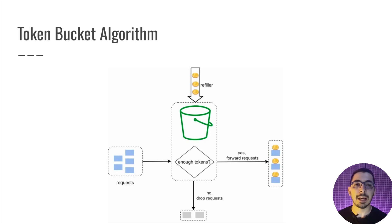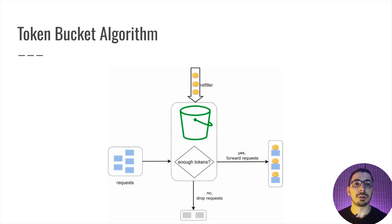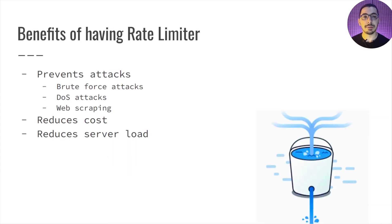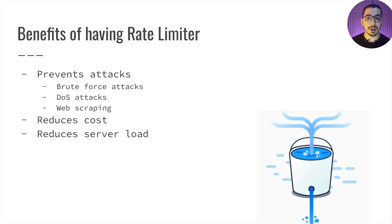In this video, we're going to see how to configure a rate limiter in Caddy running as a Docker container. Rate limiting is one of the necessary things to enable in our reverse proxies to prevent things like brute forcing, DoS attacks, or web scraping. If you want to learn more about rate limiting, I've got a video linked in the description.